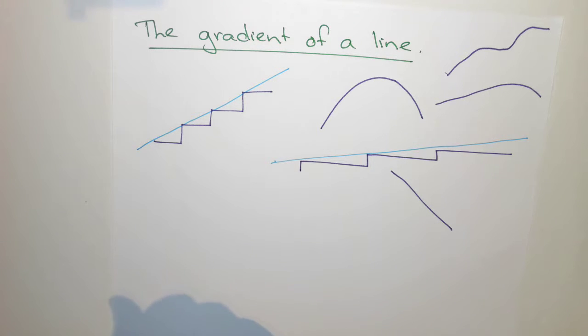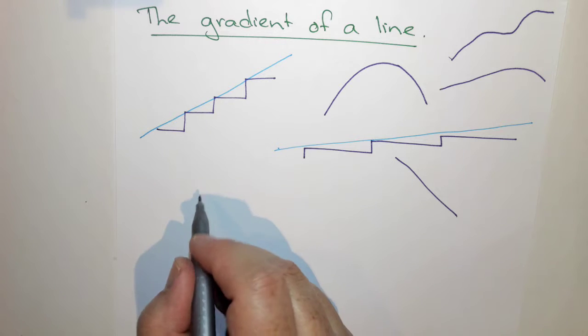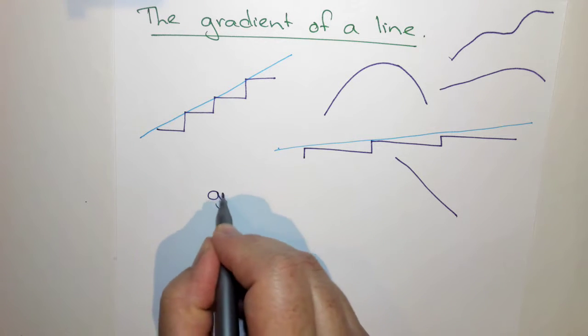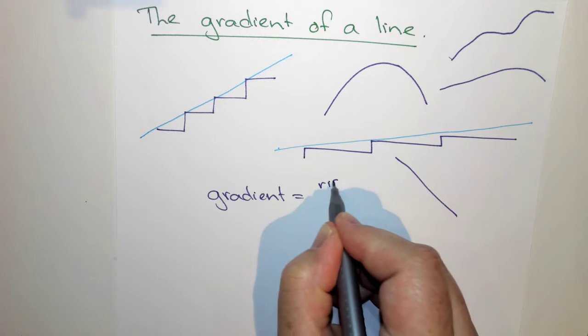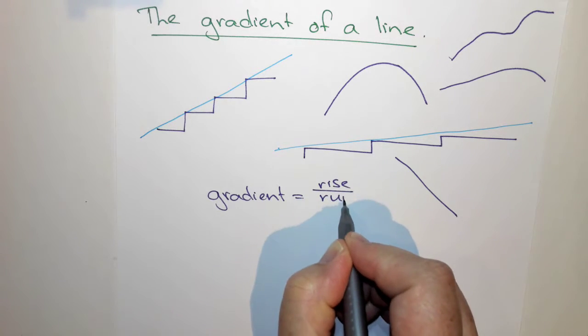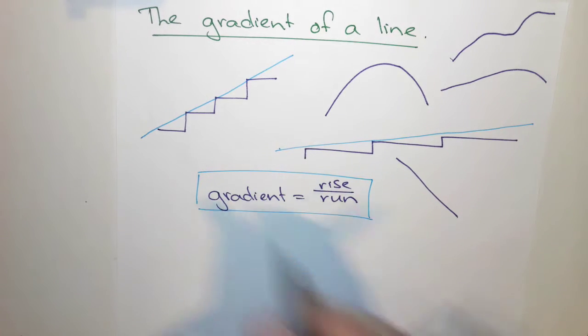So you're going up the stairs, down the stairs. The key idea here is there's a formula that we need to know. And that is this, that the gradient is equal to the rise over the run. This is one of the most important formulas you need to know.